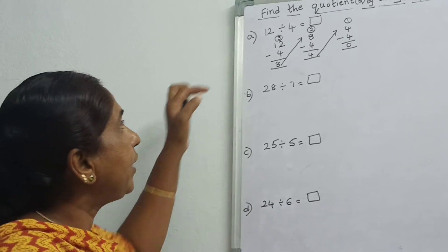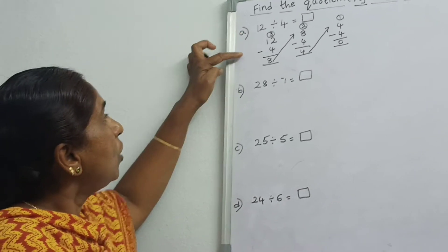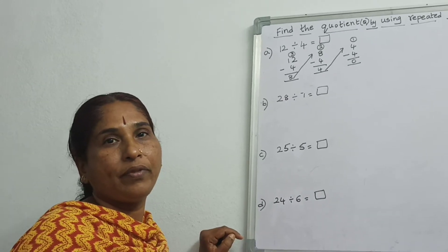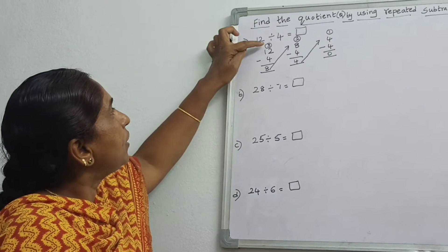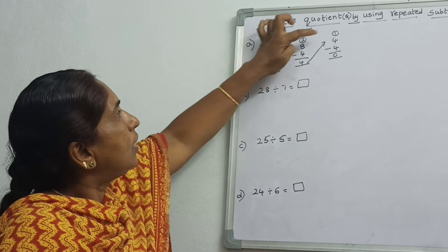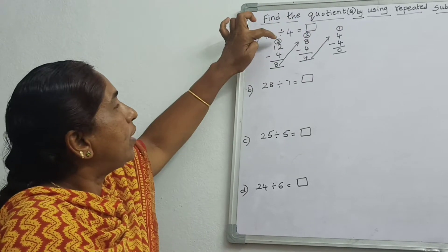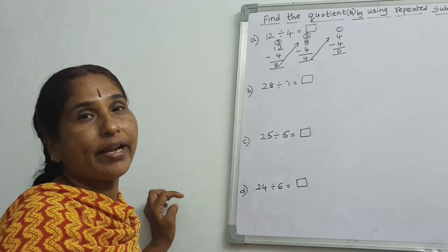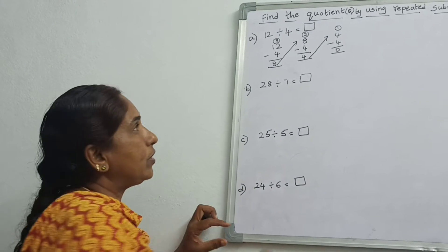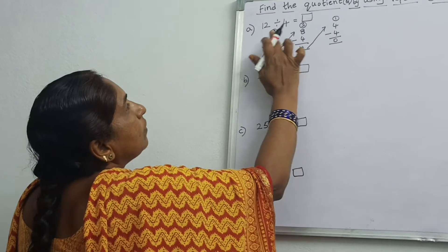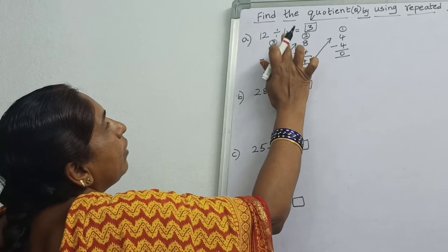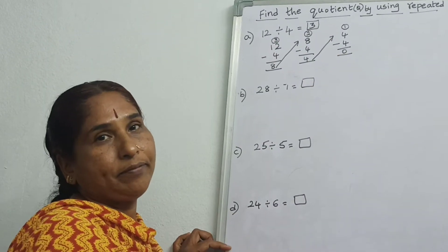In the same way, for repeated subtraction also, 2 sums in one page you can do. But after writing the sum, if you leave 2 lines, you can write how many times you have subtracted in those boxes. Is it clear children? So 1 time, 2 times, 3 times.